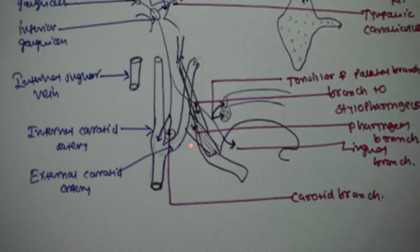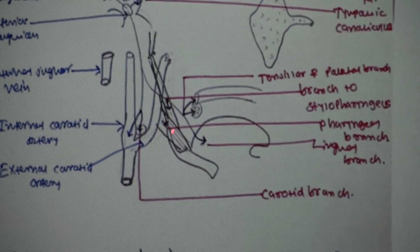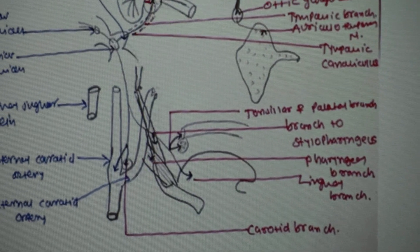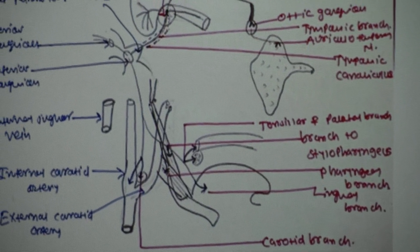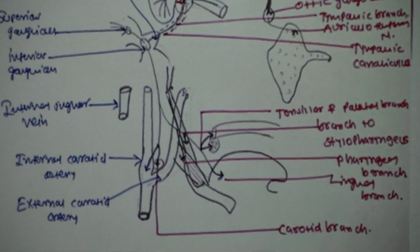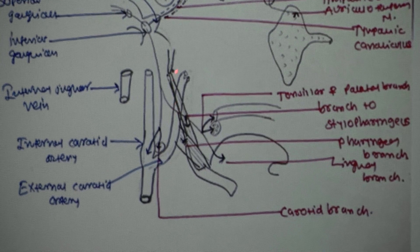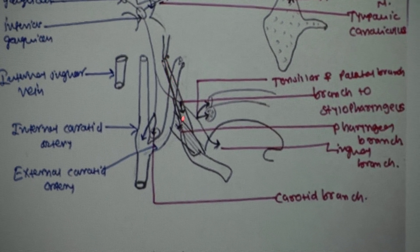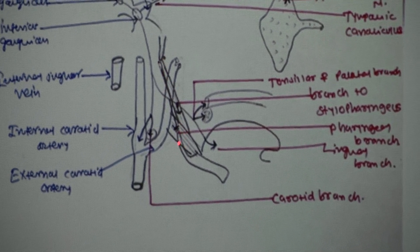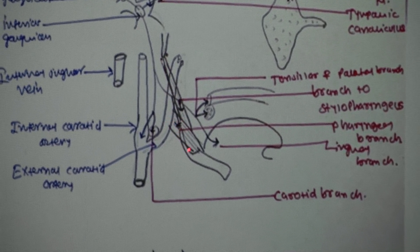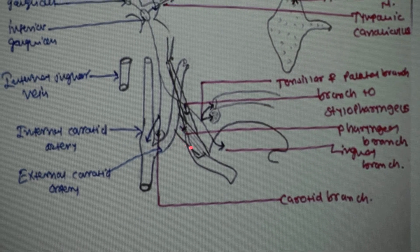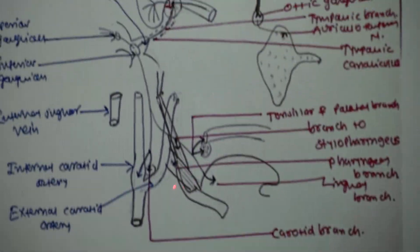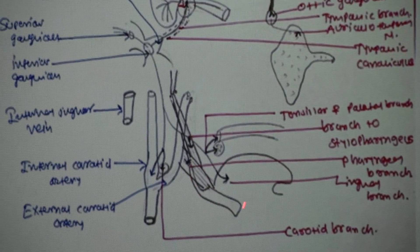This small portion is the middle constrictor muscle. The middle constrictor muscle is attached to the hyoid bone. So here there are two important muscles: the stylopharyngeal muscle and the middle constrictor muscle. And the important landmark is the hyoid bone.